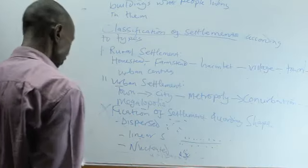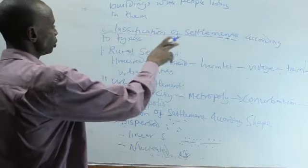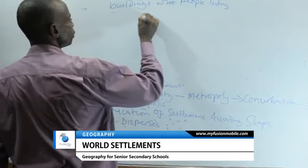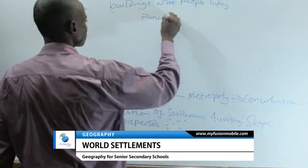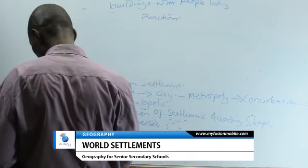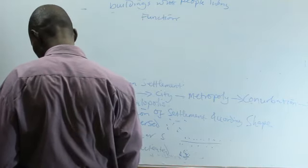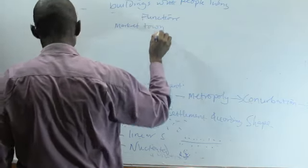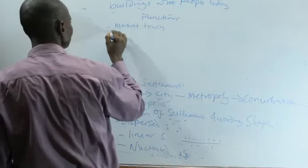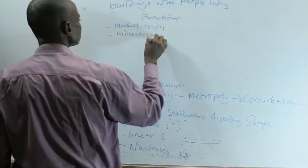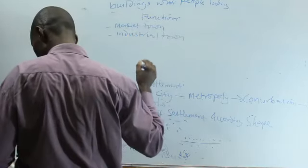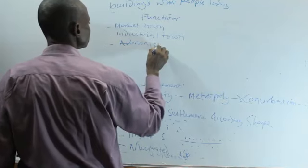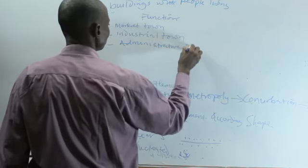Another form of classification is according to functions. Under classification by functions, we have market town, industrial town, and administrative town.